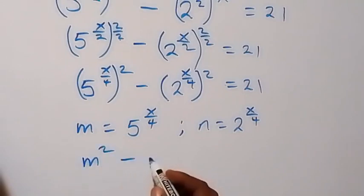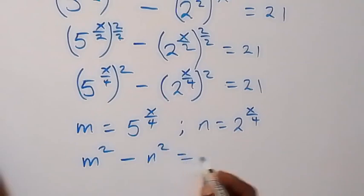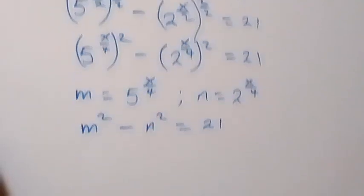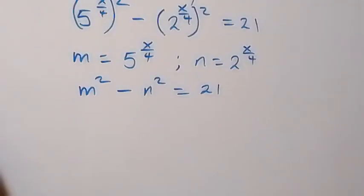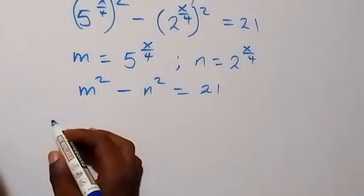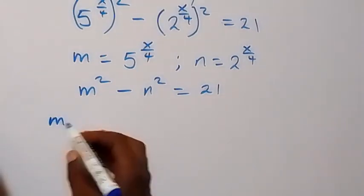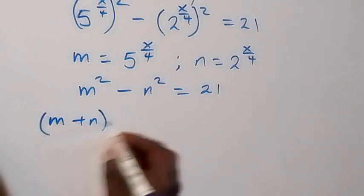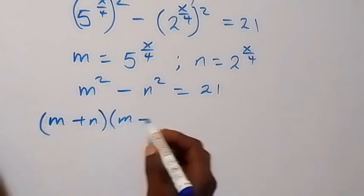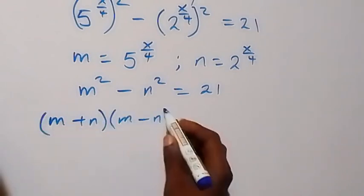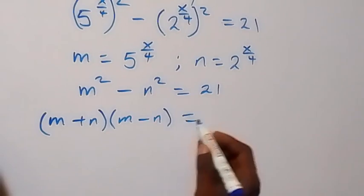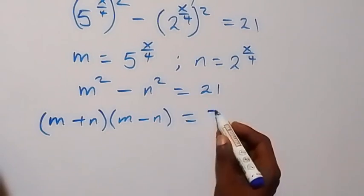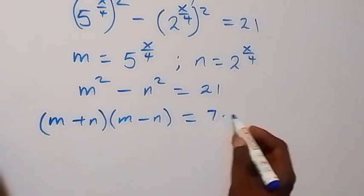Minus n squared equals to 21. And from here we have difference of two squares, which is now m plus n multiplied by m minus n equals to 21. Here we can write that as 7 times 3.